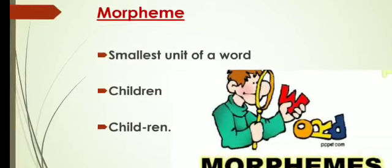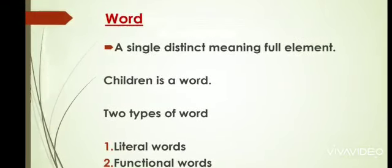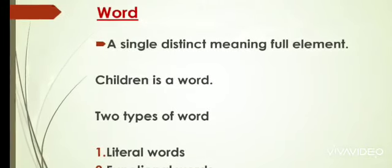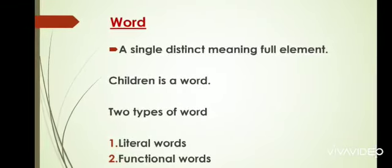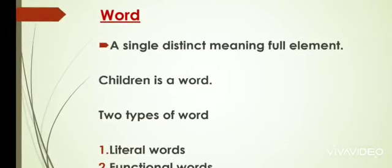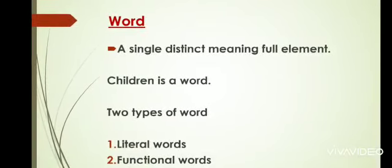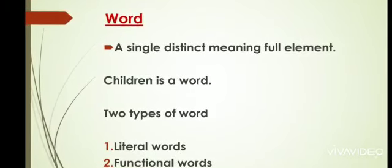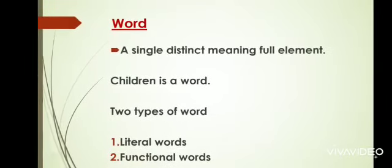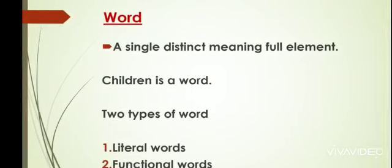Now we will discuss what a word is. A word is basically a single distinct meaningful element — for example, the whole word 'child' is a word. There are two types of words: literal words and functional words. Literal words have full meaning, such as nouns, adjectives, and verbs. Functional words are used in a sentence in a more general way, such as prepositions, conjunctions, and interjections. Both are important.